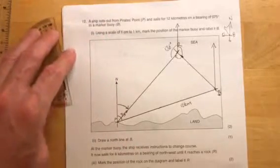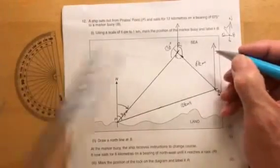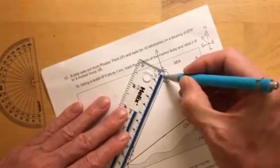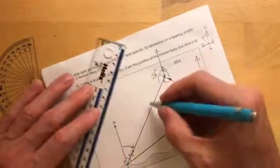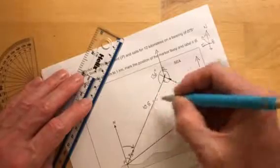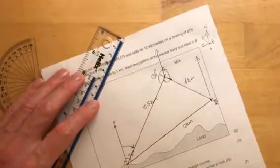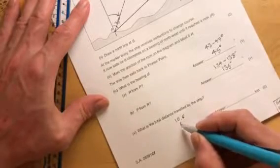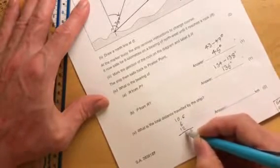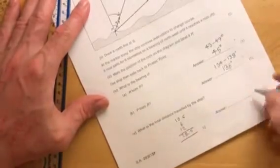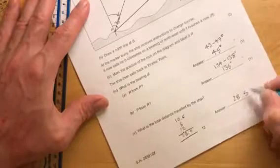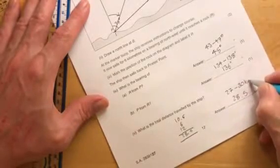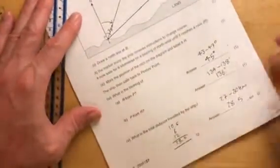What is the total distance travelled by the ship? Well, we know that that one's 6 centimetres. And I think this actually could be worked out by Pythagoras. But that is 10.5 centimetres, which is 10.5 kilometres. Plus 6, plus 12, that's 28.5 kilometres. We'll give you anything from 27 up to 30 kilometres. Maybe that's a bit generous, but there we go.